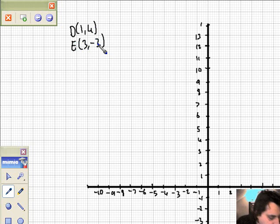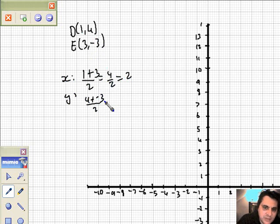D is the point 1,4 and it says what are the coordinates of the midpoint of D,E? So okay, let's do it by calculation. We've got x is 1 plus 3 over 2, that's 4 over 2, otherwise known as 2. So that's the x part done. And the y part, we've got 4 plus -3 divided by 2. 4 minus 3 is 1 over 2, answer a half.